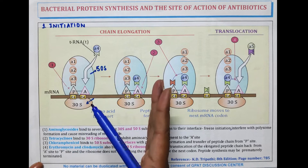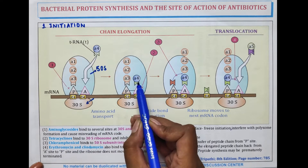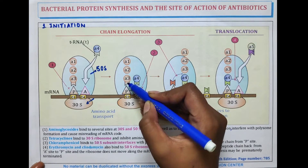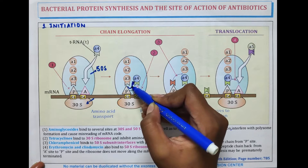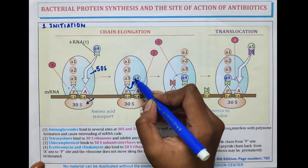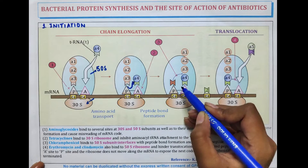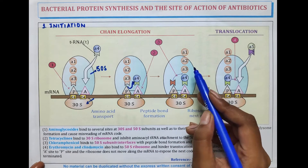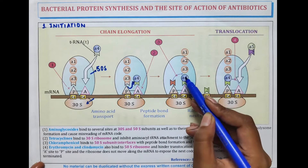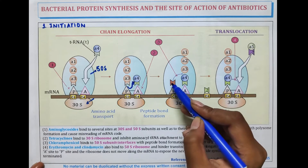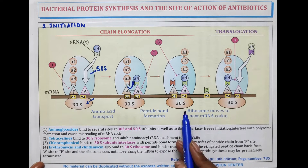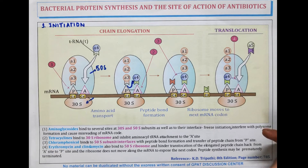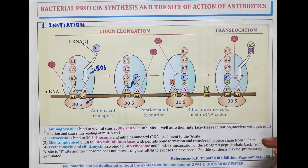In chain elongation, the A4 amino acid is added to the chain. All three amino acids A1, A2, and A3 move to the A site from the P site and get attached above this. From the P site, amino acids move to the A site. This is chain elongation, and again these are moved back to the P site. In translocation, the ribosome moves and addition of new amino acids occurs and the chain is terminated.